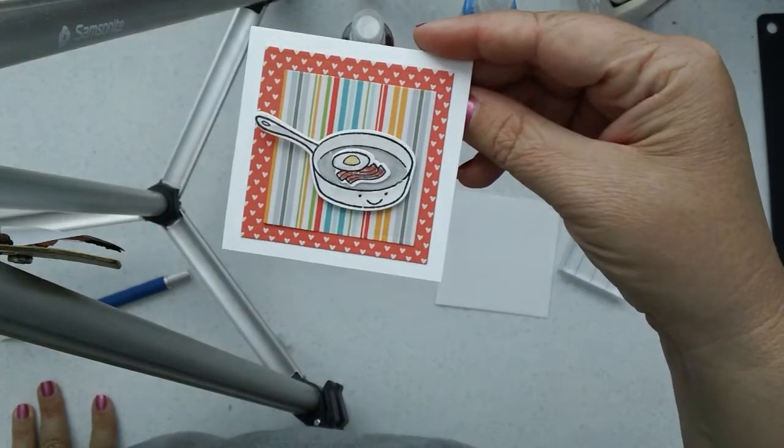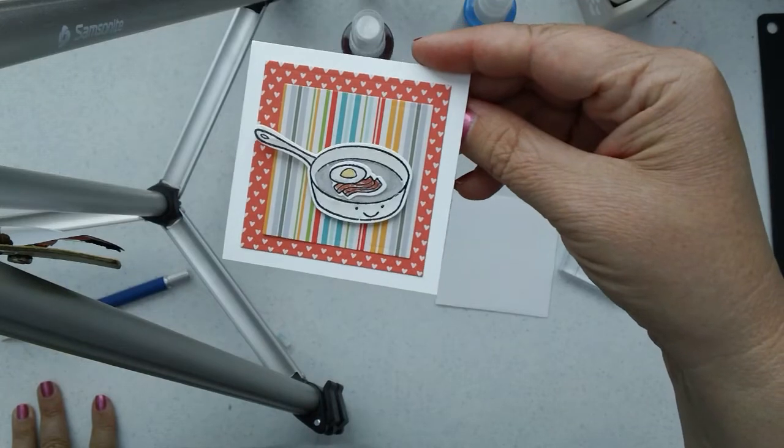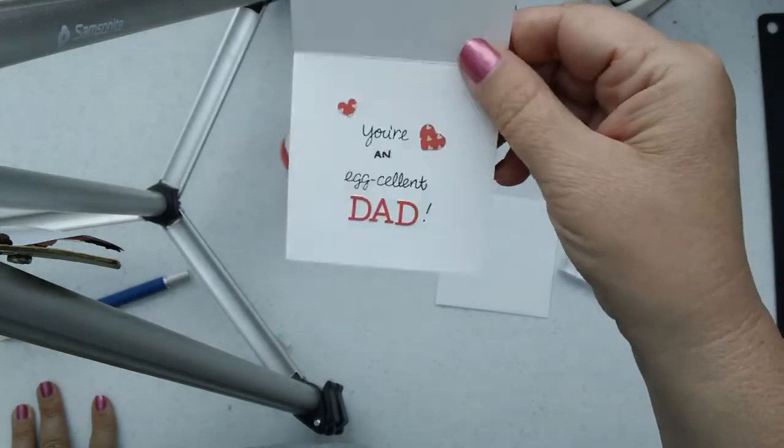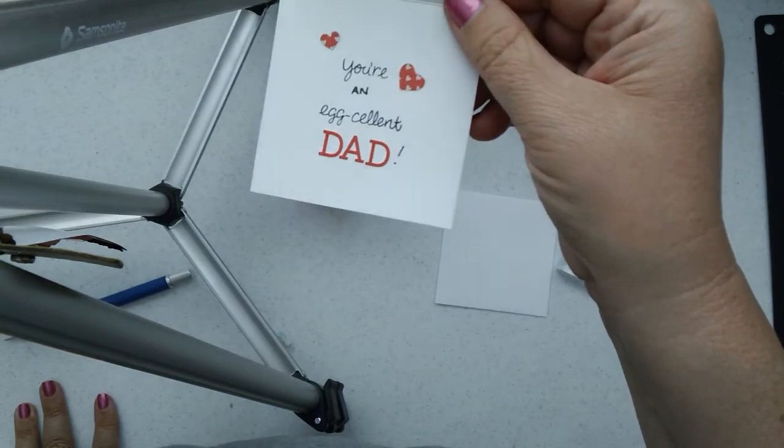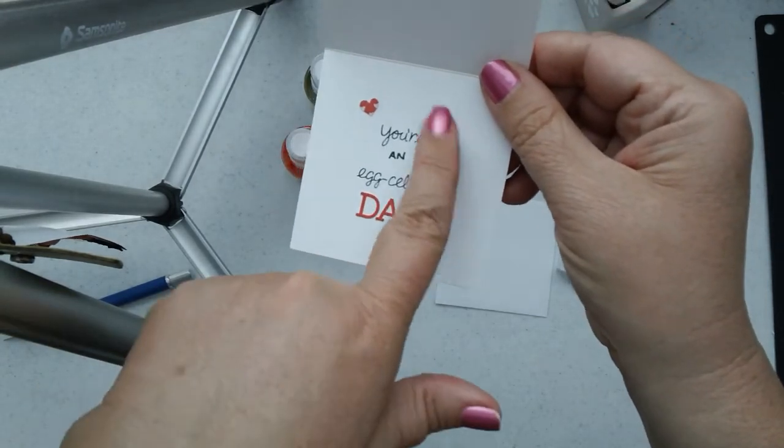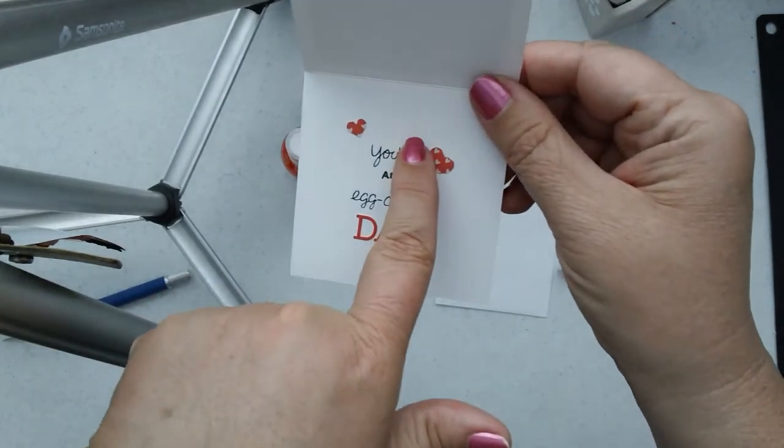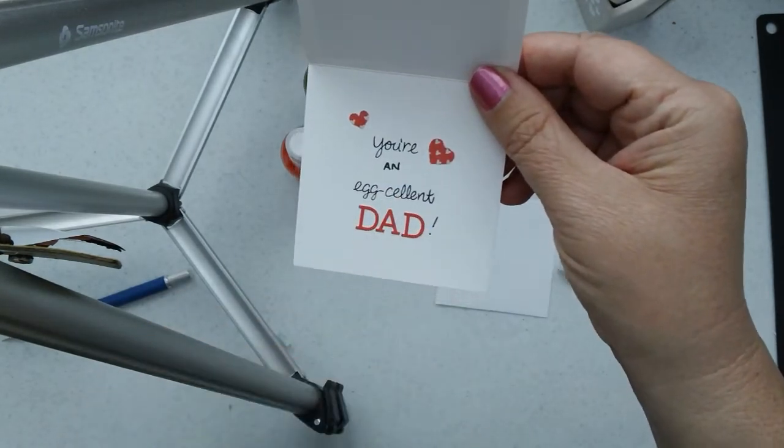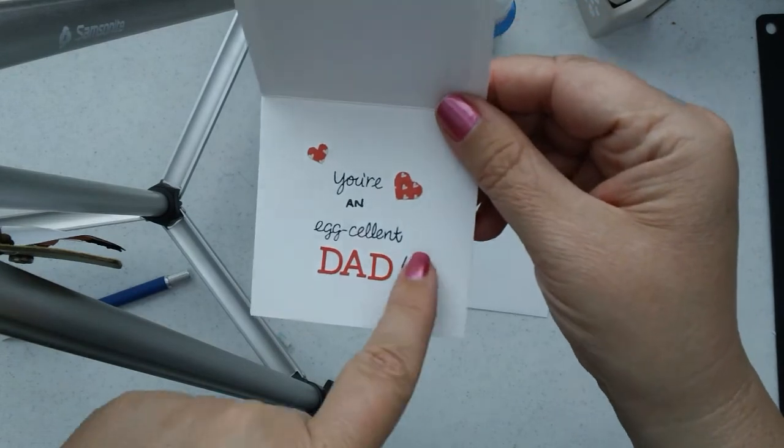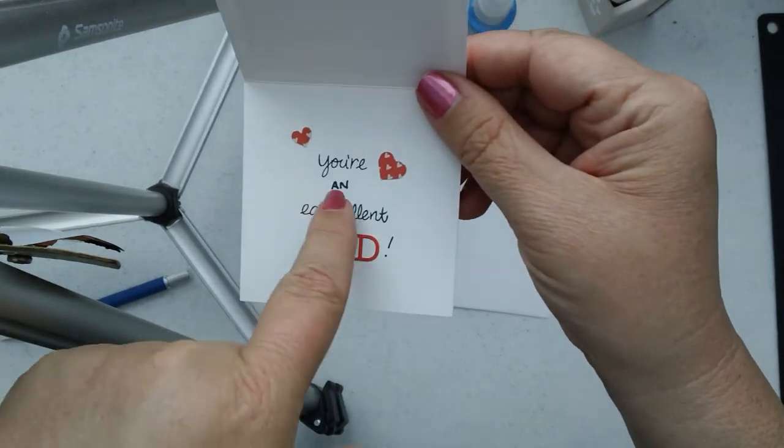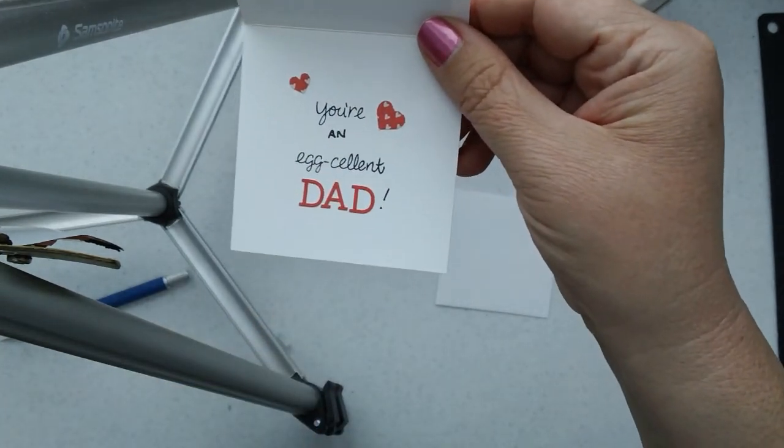But so it's just that little frying pan with the eggs and bacon. And then it says, You're an Eggcellent Dad. So, and I use letter stickers for the dad, some more of those little hearts. And the You're and the Eggcellent come in that stamp set. So anyway, and I just hand wrote the and. So anyway.